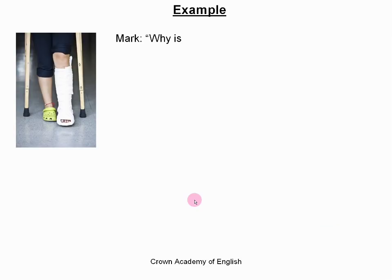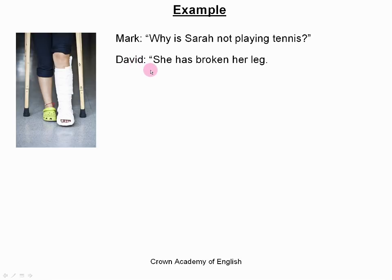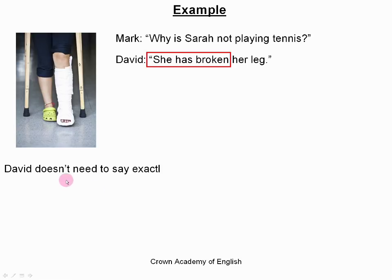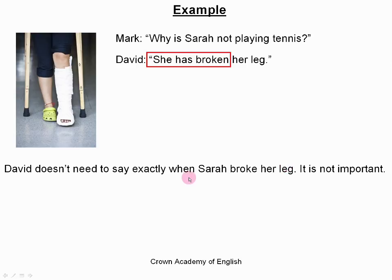Example. Mark says, 'Why is Sarah not playing tennis?' David replies, 'She has broken her leg.' Here is the present perfect. The explanation is that David doesn't need to say exactly when Sarah broke her leg — it is not important. The only thing that is important is that it is in the past. So the present perfect tells us that the action, the accident, is in the past, but we do not know exactly when she broke her leg.